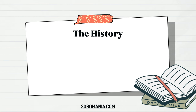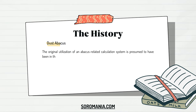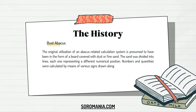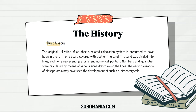Across the historical ages, Soroban has been used in several ways. The Dust Abacus: the original utilization of an abacus-related calculation system is presumed to have been in the form of a board covered with dust or fine sand. The sand was divided into lines, each one representing a different numerical position. Numbers and quantities were calculated by means of various signs drawn along the lines. The early civilization of Mesopotamia may have seen the development of such a rudimentary calculator.